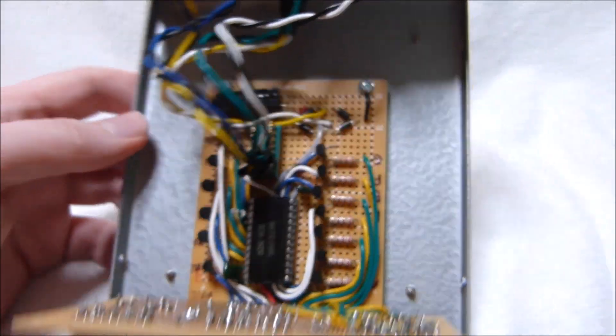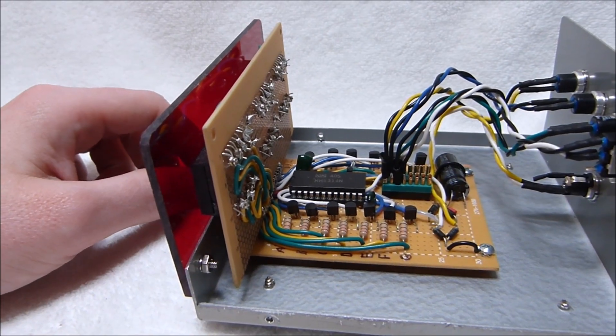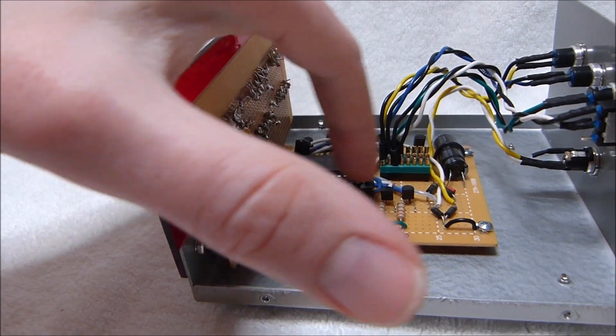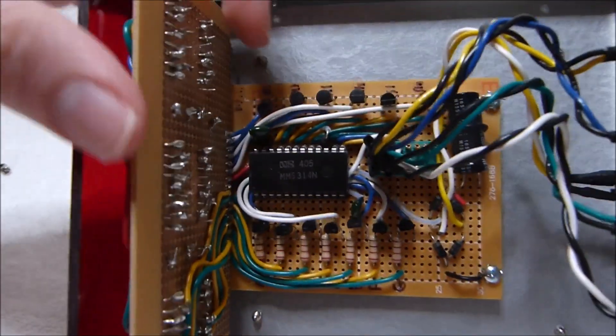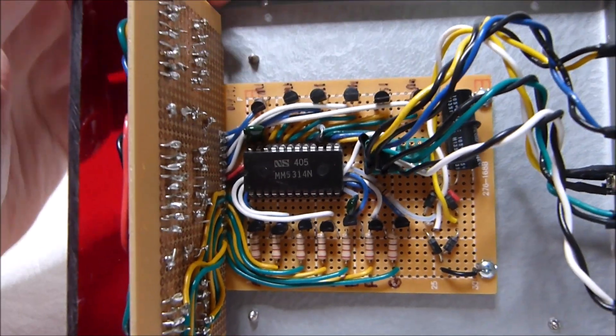As you can see, everything is hand-wired, even the display board, which was a bit of a pain in the neck. You can see how many jumper wires there are. This clock is multiplexed, so these transistors here drive the segments, and these transistors here select the digit being driven.